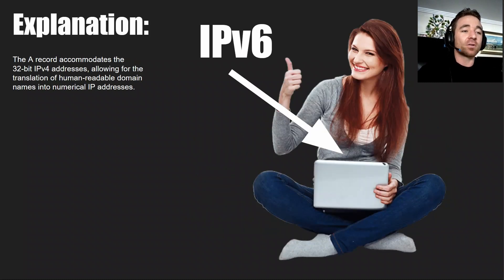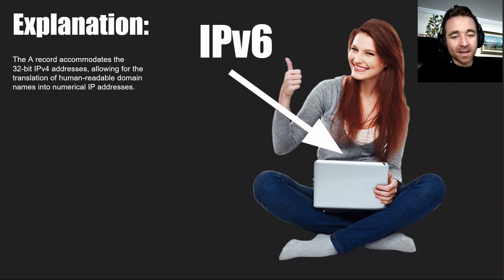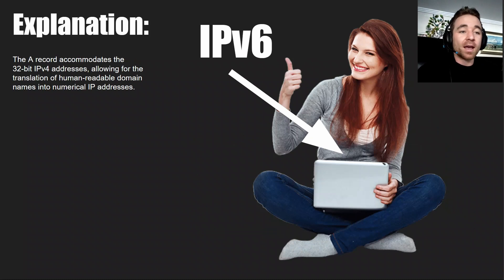The A record accommodates the 32-bit IPv4 addresses for translation. A is IPv4 and AAAA is IPv6. The way I remember it is IPv6 is longer than IPv4, and AAAA is longer than A — that's how I connect the dots.